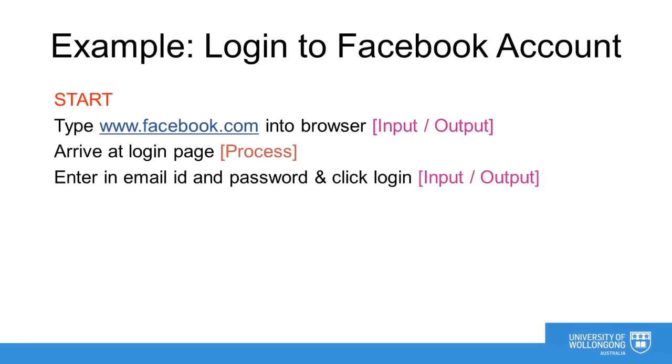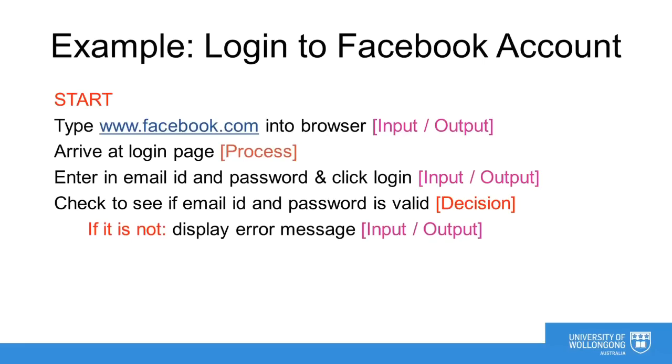The user is then prompted to enter their user ID and password. This is an input output process. Facebook then needs to determine if the username and password is correct. This is a decision. Depending on the decision, there will be two different outcomes. If the password is wrong, a login error will occur and the user will receive an error message. This is an input output process. If the password is correct and the information contained within the user's Facebook account will be displayed. This is an input output process. The algorithm is now complete.